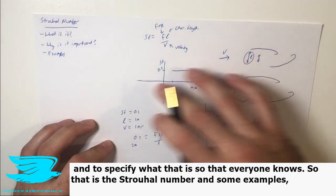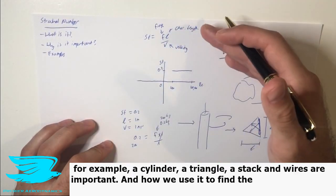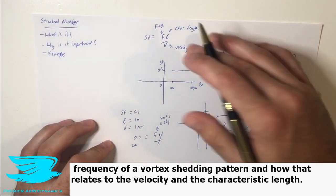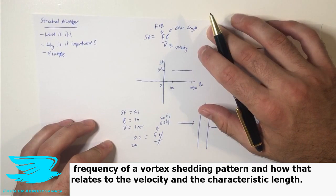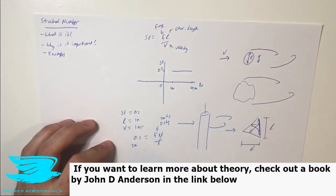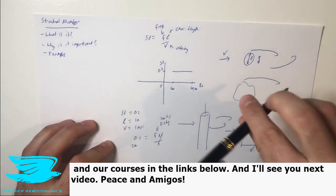So that is the Strouhal number and some examples, for example, a cylinder, a triangle, a stack, and why it is important, and how we use it to find the frequency of a vortex shedding pattern, and how that relates to the velocity and the characteristic length. So if you liked this video, make sure to like it. And if you want to see more like this, click the subscribe button. And if you want to learn more about theory, check out a book by John D. Anderson in the links below, and our courses in the links below. And I'll see you in the next video. Peace, amigos.